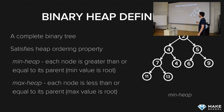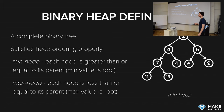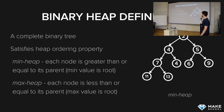For it to be a heap, the values in the nodes have to satisfy the heap ordering property. There's a thing called a min heap and a max heap. In a min heap, each node is greater than or equal to its parent. So if we look at this min heap: four is greater than or equal to two, five is greater than or equal to two, seven is greater than or equal to four, and so on. This satisfies the min heap property.